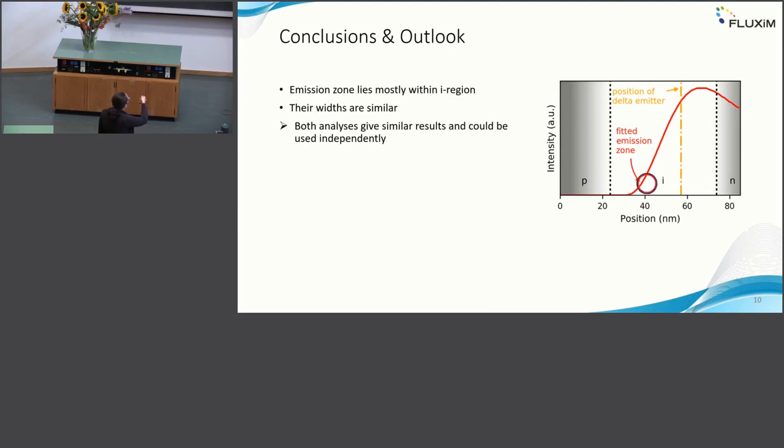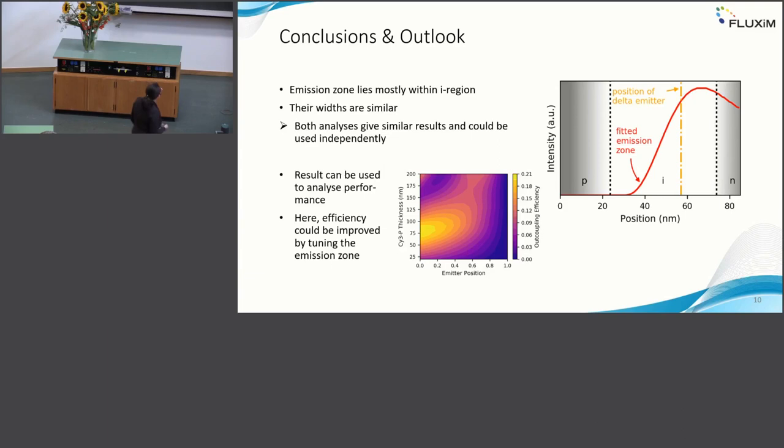What is interesting is that the emission zone lies mostly within this intrinsic layer, as you would expect. Also, their widths are quite comparable. This is really good because now in a future study you could say I can either do one or the other analysis and I would get reasonable results. They seem to be transferable.